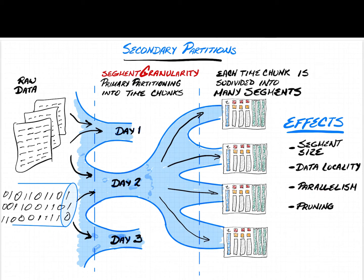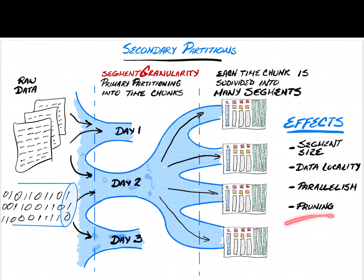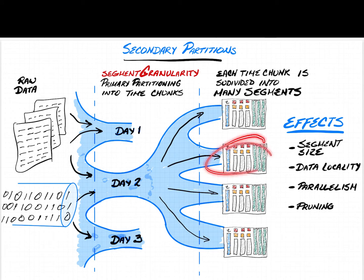Another reason is parallelism. If you had to process all of a day's data in a single thread because you had a single file, it would take more time than if you split that file into multiple files and had a separate thread process each one, getting results faster with multiple workers on the same subset of data. Additionally, some strategies help with pruning — based on filter criteria, you can select just one or a few files for a given time chunk instead of reading them all. Different partitioning strategies give you different pruning capabilities.